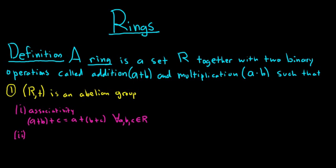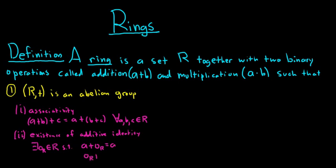The second condition is the existence of an additive identity. We use the symbol zero, or zero sub R, to denote it. There exists zero sub R in R such that a plus zero R equals a and zero R plus a equals a, for all a in R.